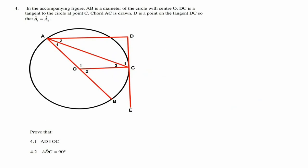Question 4: AB is a diameter of the circle with center O. DC is a tangent to the circle at point C. AC is drawn and D is a point on tangent DC such that A1 = A2. For 4.1, prove that AD is parallel to OC. We look for corresponding, co-interior, or alternate angles.